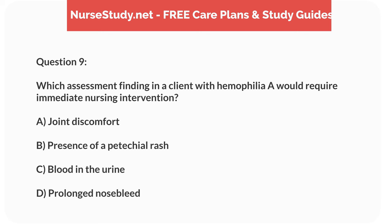Question 9. Which assessment finding in a client with hemophilia A would require immediate nursing intervention? A. Joint discomfort. B. Presence of a petechial rash. C. Blood in the urine. D. Prolonged nosebleed.